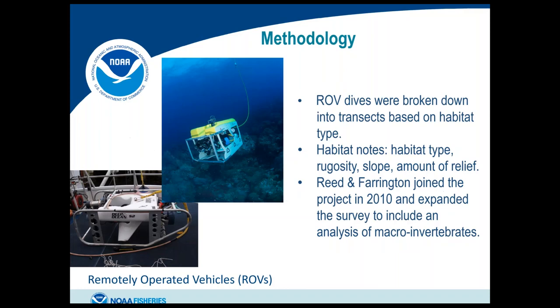Our surveys were conducted using ROVs. For most of the project we partnered with the University of North Carolina at Wilmington and used their Phantom II and Mohawk ROVs. The ROV dives were broken down into transects based on habitat type. Andy David and I handled the fish analysis; John Reed and Stephanie Farrington joined as co-PIs in 2010 and expanded the survey to include macroinvertebrate analysis. Today I'll focus on the fish analysis, though the invertebrate analysis can be found in our annual cruise reports.